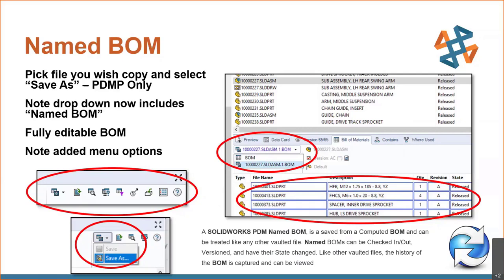This named bill of material — saved from a computed BOM — is treated like any other file in the vault. We can check it in and check it out. We can have state changes and version histories. All that information can be saved about the bill of material file.